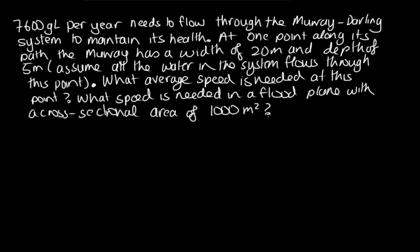OK, so we know that the volume over the time which is needed is we've got 7,600 gigalitres. So that's 7,600 times 10 to the 9 liters. And we want to get this into SI units. So we'll convert it into meters cubed. So if we times it by 10 to the minus 3, that gets us from liters to meters cubed. And then we need per unit time. At the moment, this is per year. So in the year, there's 365 days.